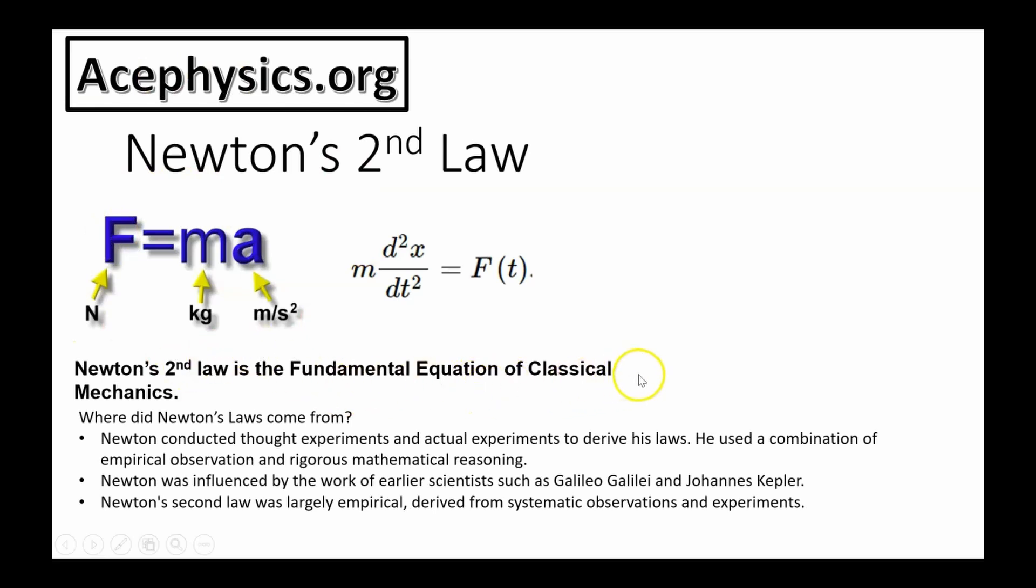Newton's second law is the fundamental equation of classical mechanics. But where did Newton's laws come from? The scientific method is how scientists discover fundamental truths about the world, known as the laws of physics. The scientific method consists of the following steps: observation, formulating a hypothesis, also known as an educated guess, conducting an experiment, and computing the consequences.